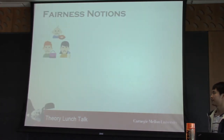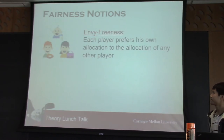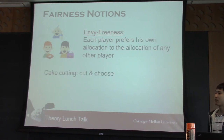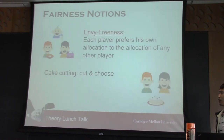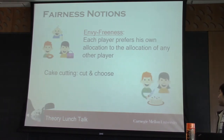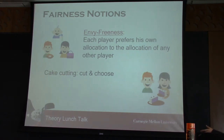Speaking of fairness notions, the most famous one is called envy-freeness. It says each player prefers its own allocation to the allocation of any other player. In the setting of cake cutting, where every item is divisible, we have a very classic protocol to solve that — cut and choose. For two players, we ask the first player to cut a cake into two parts, the second player to choose the one he or she prefers, and the first player takes the remaining one. We can guarantee envy-freeness because if the first player cuts into two equal parts, no matter which part the second player chooses, he won't envy the other.